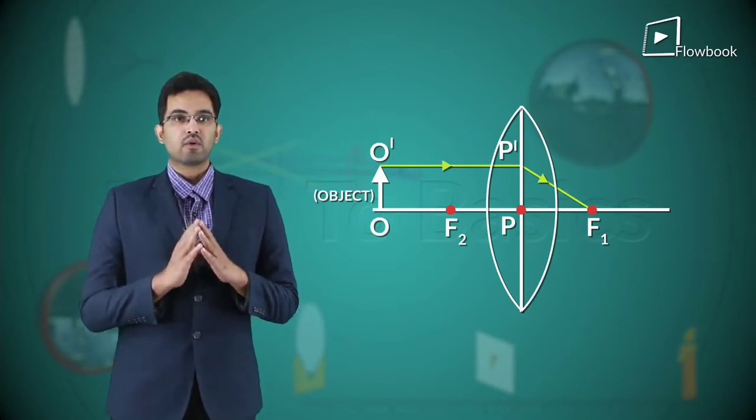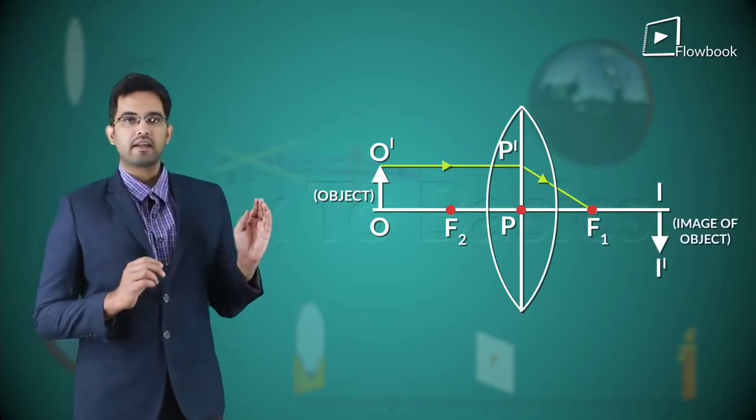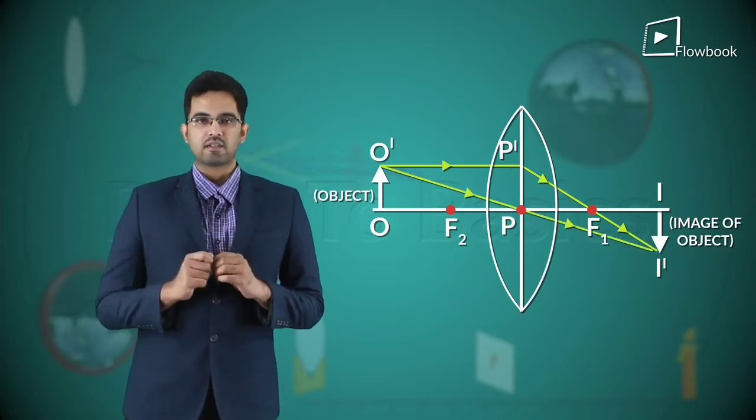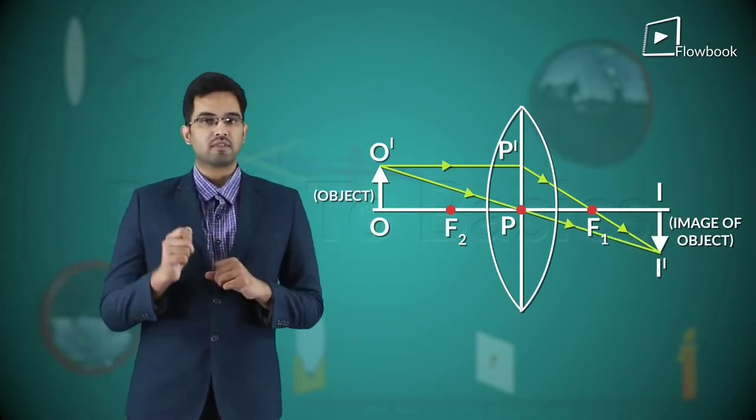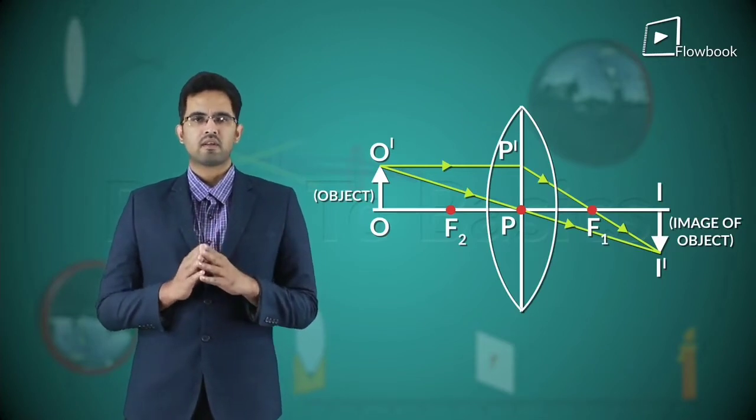Similarly, a ray through the pole will intersect the previous ray at I'. Thus, I I' is the image for the object O O'.